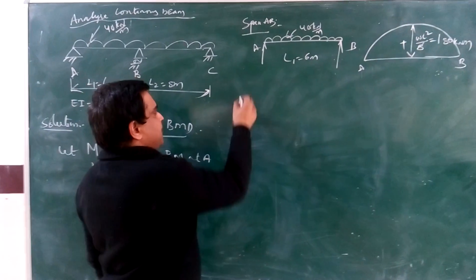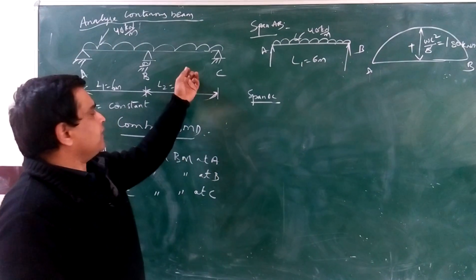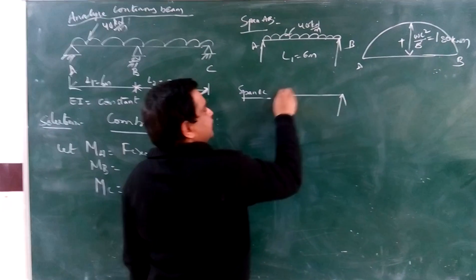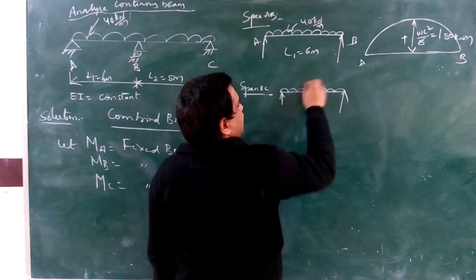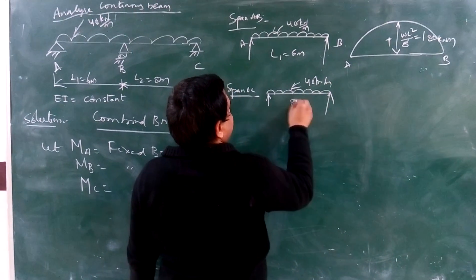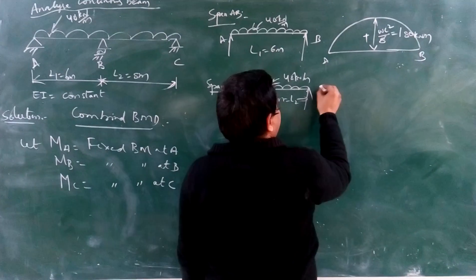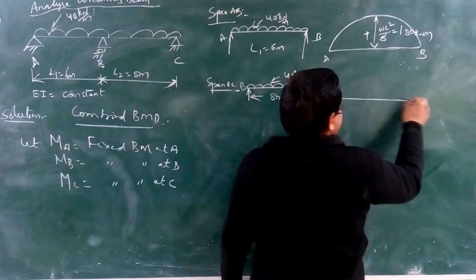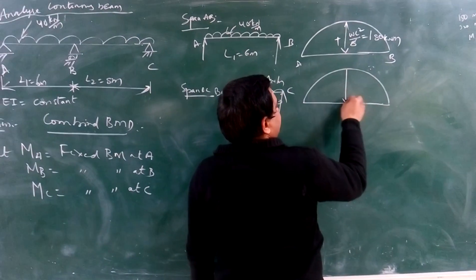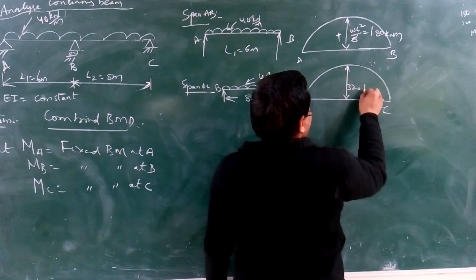Coming to the second span BC, the span BC has a length of 8 meters and it also carries a UDL. The maximum bending moment occurs at the midpoint of the span and equals 320 kNm. The shape of the bending moment diagram for this span is also parabolic since it is a simply supported beam, with a maximum value of 320 kNm at the center.